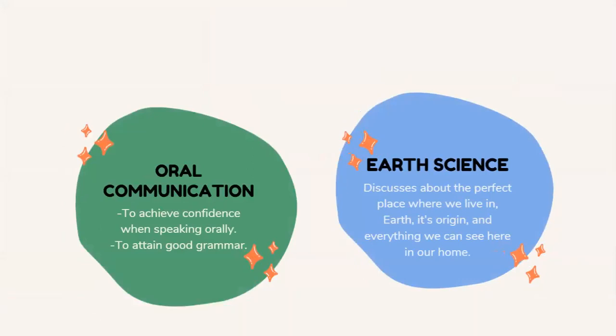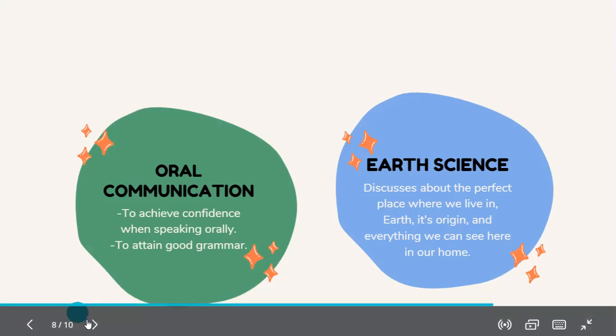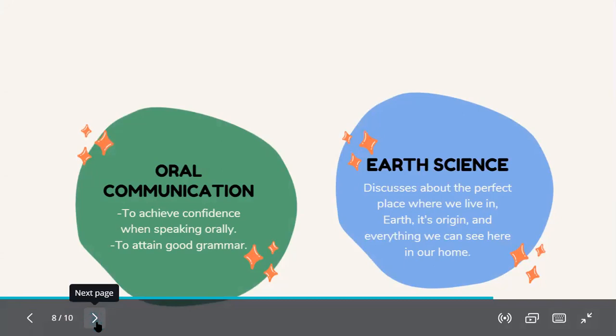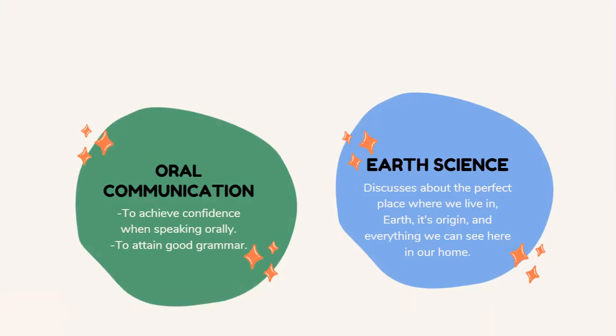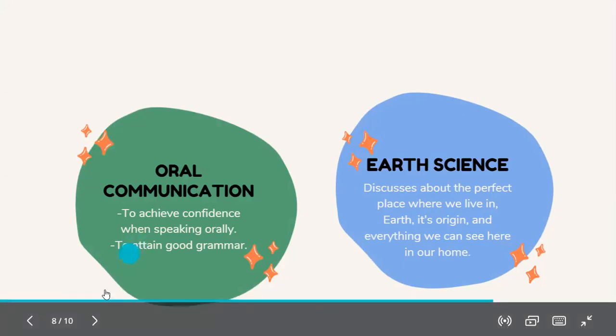Earth Science discusses the perfect place where we can live in — Earth. Its origin and everything we can see here in our home, like rocks, volcanoes, and more.